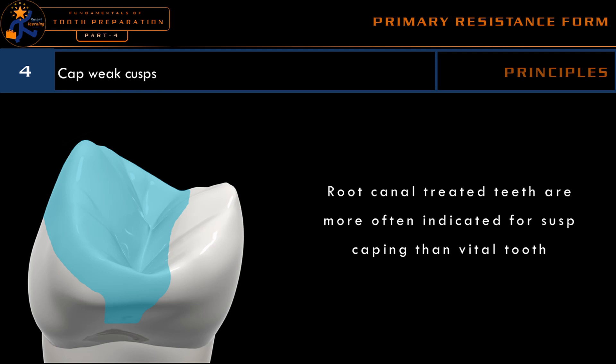The fourth principle employed for providing primary resistance form is to cap the weak cusp. We have seen about capping the cusp in adequate depth in the outline form and initial depth. Whenever indicated, we should cap the weak cusp to maintain the strength of the tooth and prevent fracture. Cusp capping is not necessary if the dentist feels the cusp is very strong even with extensive decay. Root canal treated teeth are always weaker compared to vital teeth, so cusp capping is required more often in root canal treated teeth.